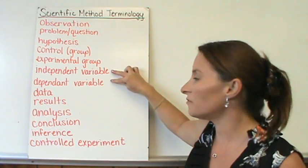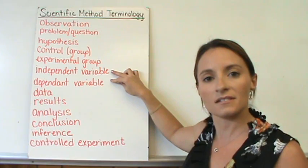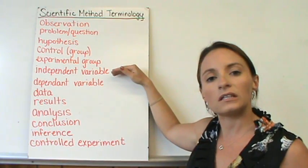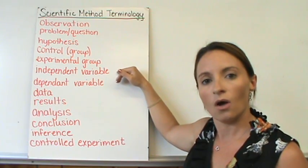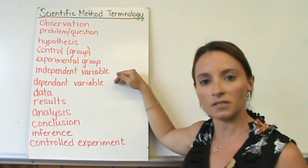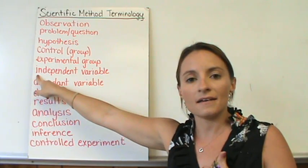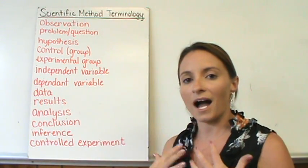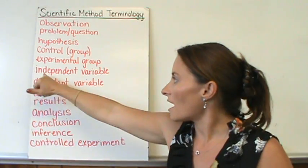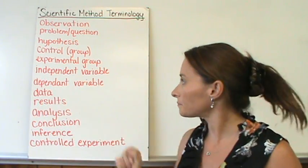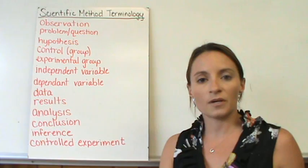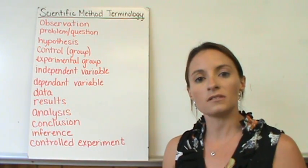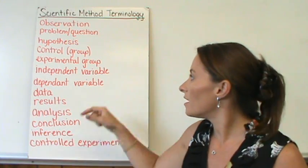Now, we have two variables that we're testing. We're always testing variables within our experiments. The first one is called the independent variable. One way to remember which one the independent variable is, is what am I, as the scientist, changing. The independent variable is what I, as the scientist, am changing. And it starts with the I. So, in my experimental setup with the fish, I am changing the concentration of pollutants in the water.